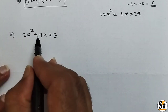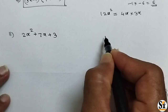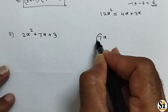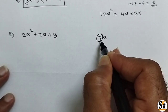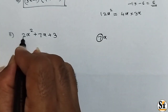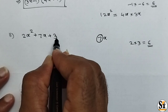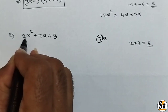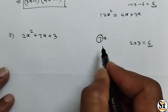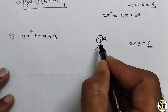Now see the second sub-question. The polynomial is 2x squared plus 7x plus 3. Here also we will use the split method for the middle term. The middle term is 7x, so consider only the coefficient 7. We have to split 7 such that the addition of the factors equals 7 and the multiplication equals 2 into 3, that is 6, because the last term is 3 and the coefficient of the first term is 2.